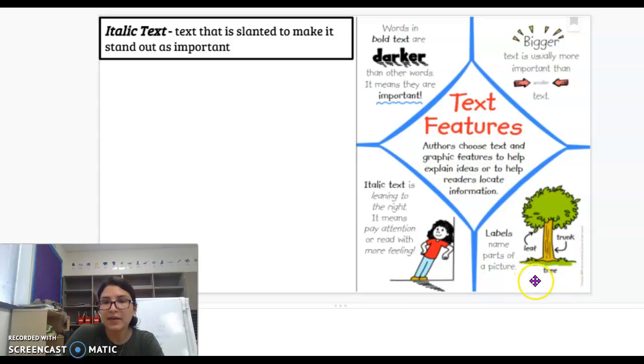Labels. Labels name parts of a picture. So here's a drawing of a tree. Here's the label, it says leaf, and here's a label that says trunk. Sometimes labels will have arrows, and sometimes they won't. It does not have to have an arrow to be a label.